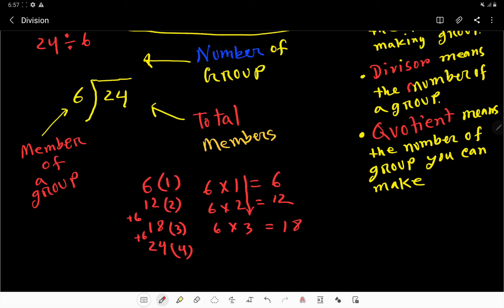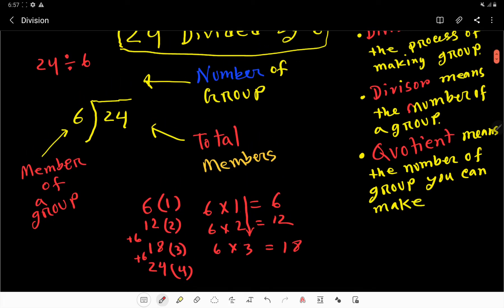6 times 4 will be 24. Just add 6 here with 18. Look, already we have gotten here 24. That is, 6 goes into 24 four times, so you have to write here 4.